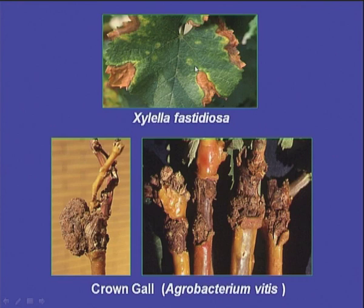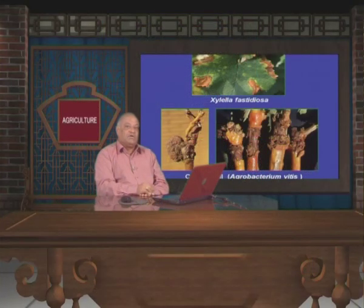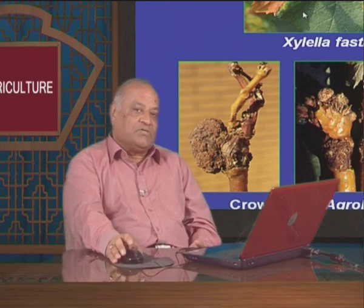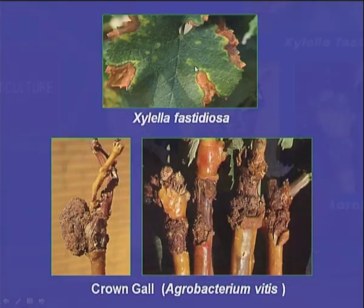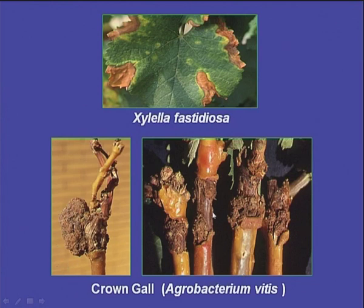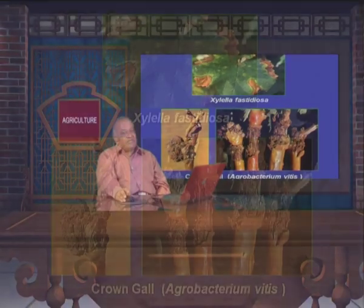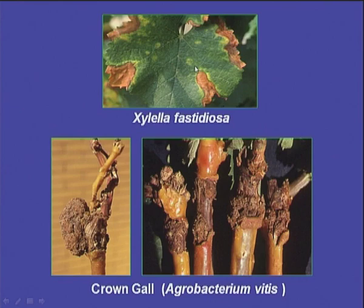These are spots caused by Xylella fastidiosa in grapes. Xylella is a type of causal organism that is very difficult to culture artificially on different artificial nutritive media. While most bacteria are easily cultured on artificial media, the fastidious nature of this bacterium causes difficulty in culturing. Earlier I told you about crown gall — this is a typical crown gall caused by Agrobacterium tumefaciens, and this is crown gall caused by Agrobacterium vitis in grape plants. Crown galls are very similar to the cells we find in cancer in human beings, and a lot of research is currently being conducted on crown galls to study the nature of cancer.